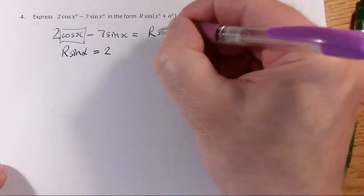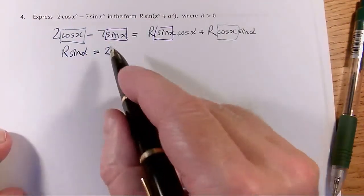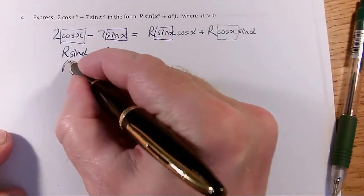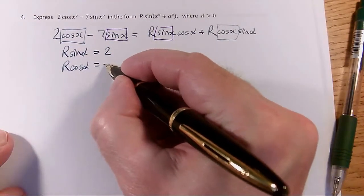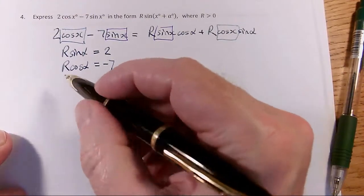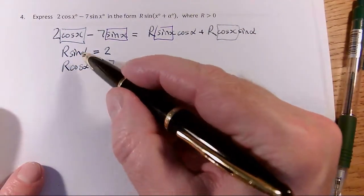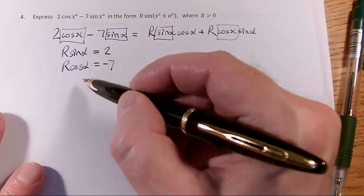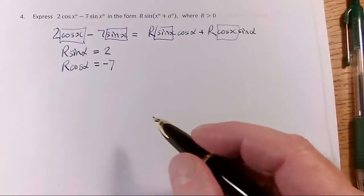And looking for sine x here and sine x here. So, oh, there's a minus. So r cos alpha is going to be negative. It's going to be minus 7. So I'm still choosing a positive r, so I'll do that in a second. But I can see that one of sine and cos is going to be negative. So alpha cannot be an acute angle.